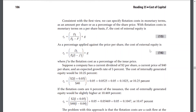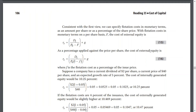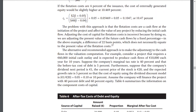Consistent with the first view, we can specify flotation costs in monetary terms as the amount per share or a percentage of the share price. With flotation costs on a per-share basis of F, the cost of equity is adjusted accordingly. The problem with this approach is that flotation costs are cash flows at the initiation of the project and affect the value of any project by reducing initial cash flows. Adjusting the cost of capital for flotation costs is incorrect because by doing so we are adjusting the present value of future cash flows by a fixed percentage, which does not necessarily equate to the present value of the flotation costs.